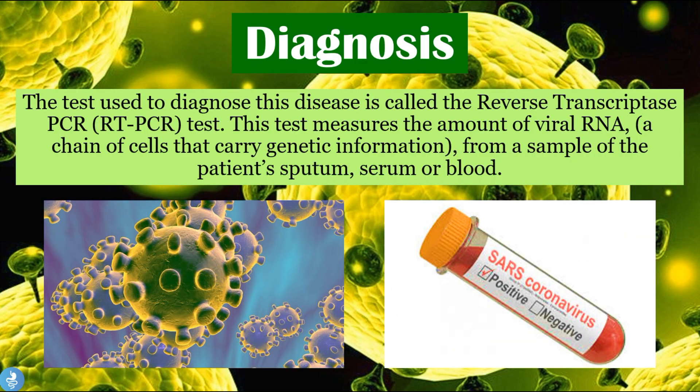So how can one go about diagnosing SARS? The test used to diagnose this disease is called the reverse transcriptase PCR test, or RT-PCR test. This test measures the amount of viral RNA — a chain of cells that carry genetic information — from a sample of the patient's sputum, serum, or blood.